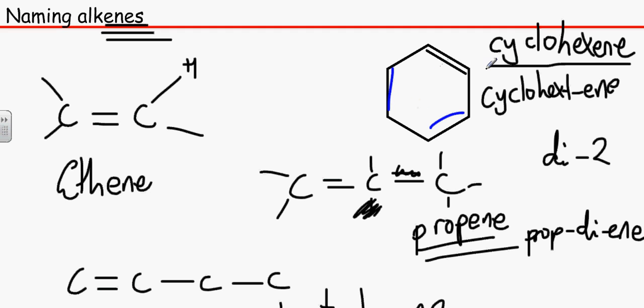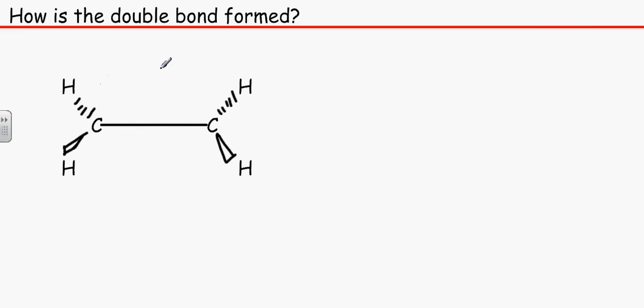How do these double bonds actually form? This bond is formed by orbital overlap between carbon orbitals. Basically they share an electron each and therefore we end up with two electrons. We call this bond a sigma bond.